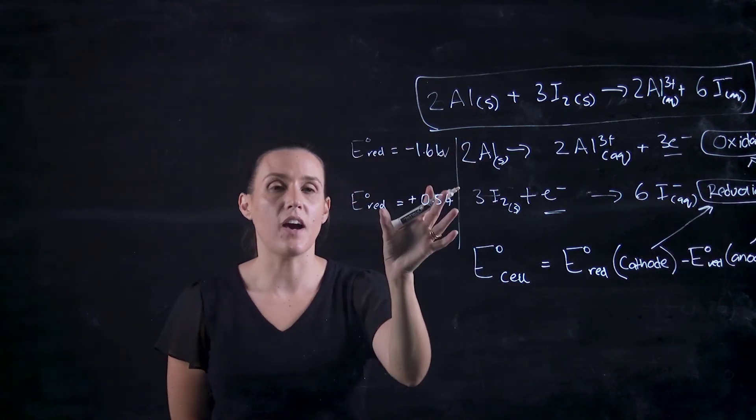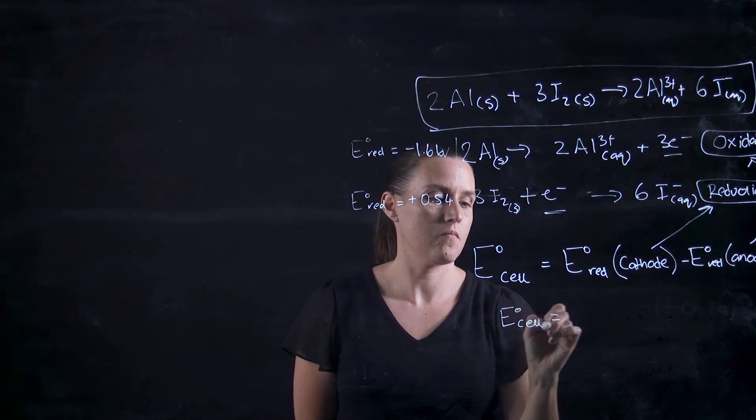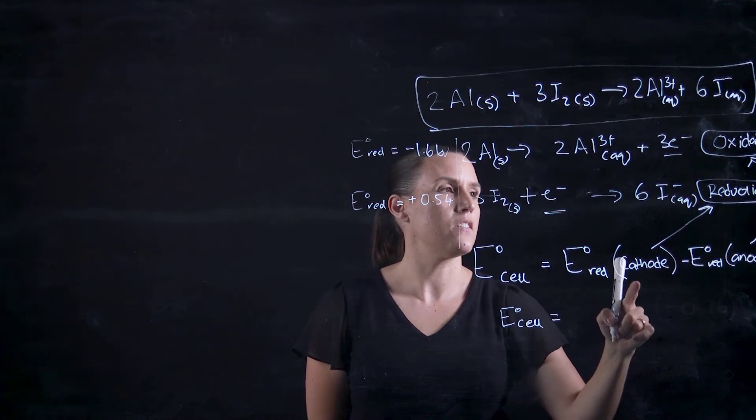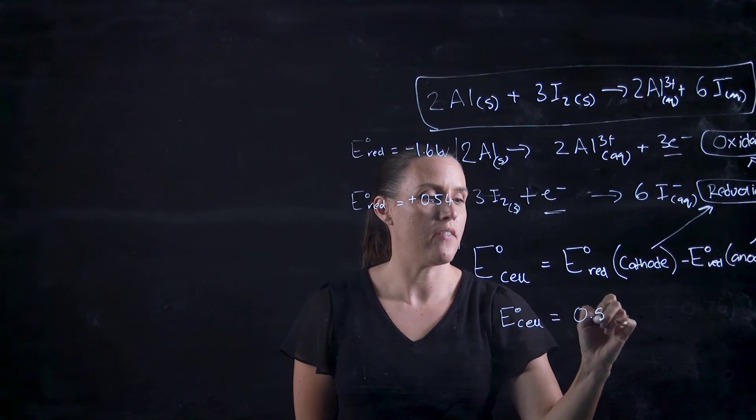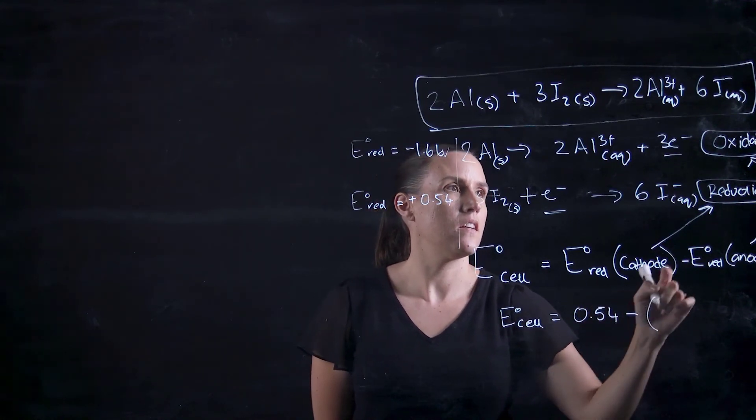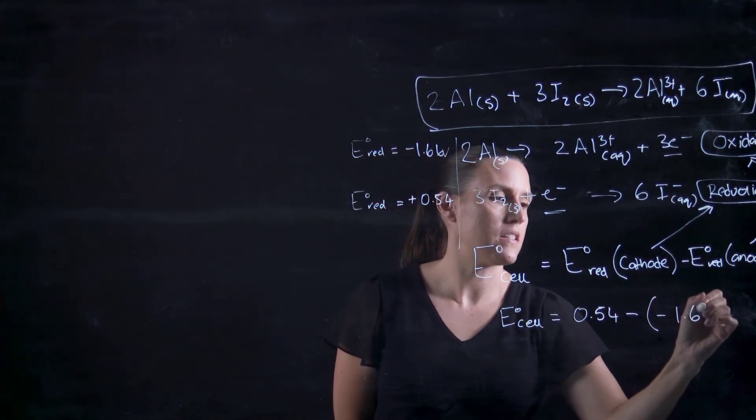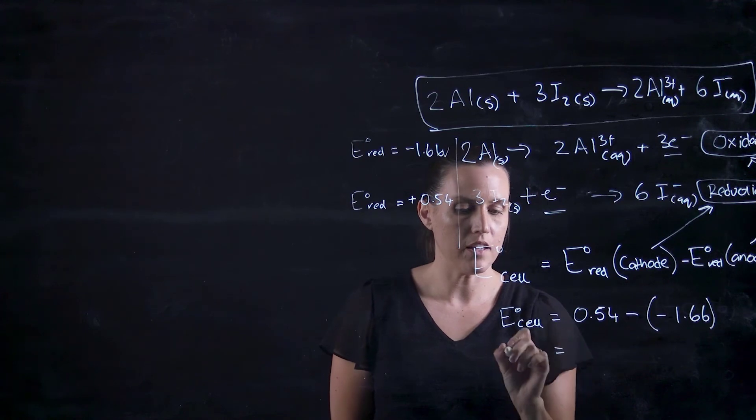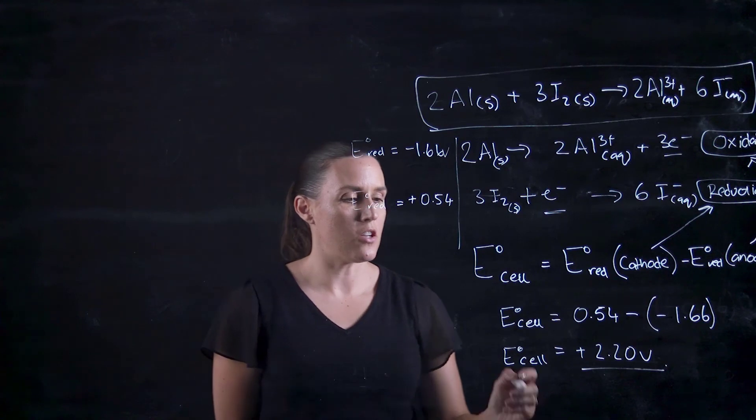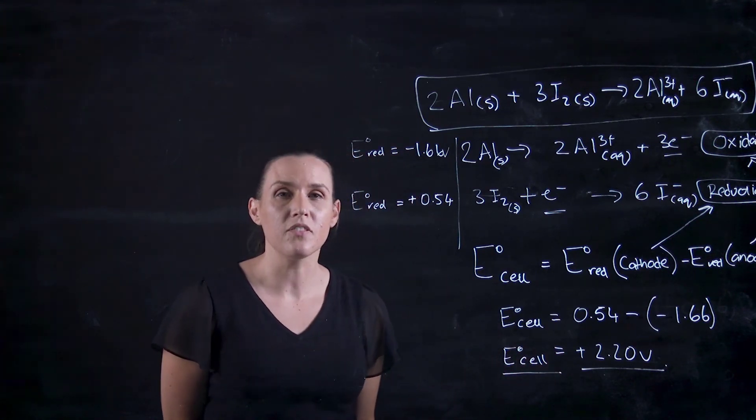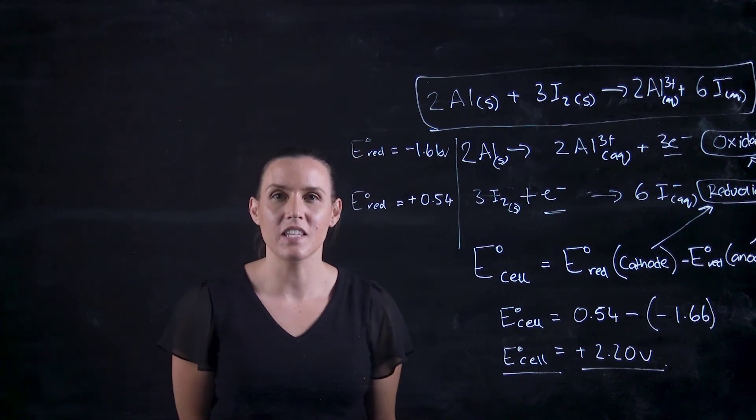Now we can just take these values and put it straight into the equation. The E naught of the reduction, that would be the I2, so it's 0.54 minus the anode which is the oxidation, so it's negative 1.66. Putting that into my calculator, I get plus 2.20 volts. Because the EMF of the cell is positive, it would be a spontaneous process. And that's it for this little video.